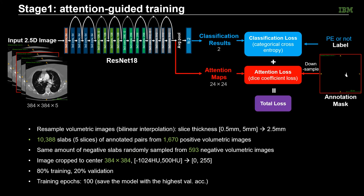Here we provide more details. Because in our data the images have a variety of slice thicknesses ranging from 0.5 to 5 mm, we first resample the images to have a consistent 2.5 mm slice thickness. We sample more than 10,000 slabs of annotated pairs from more than 1,600 positive volumetric images, and the same amount of negative slabs randomly from around 600 negative volumetric images. All images were cropped to the center 384 by 384 with values mapped to between 0 and 255. We used 80% of the data for training and the other 20% for validation. We trained the network for 100 epochs and saved the model with the highest validation accuracy.